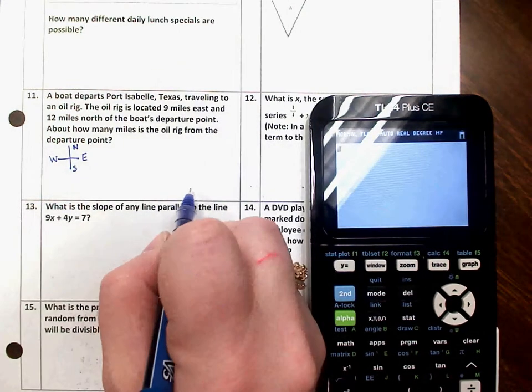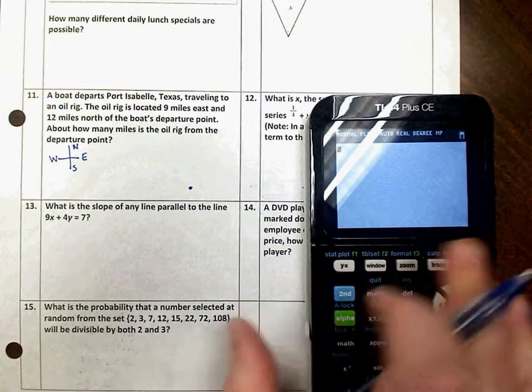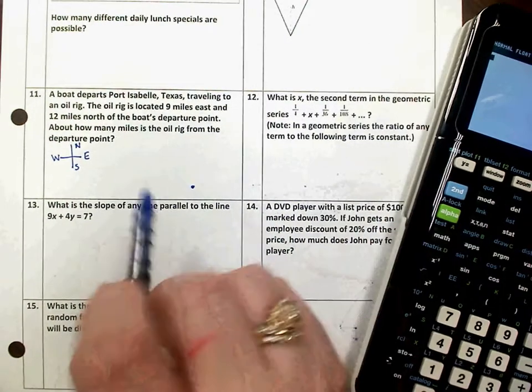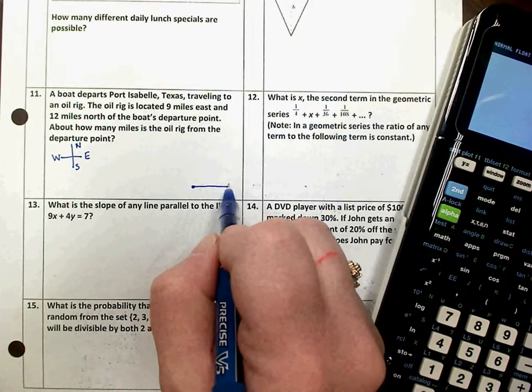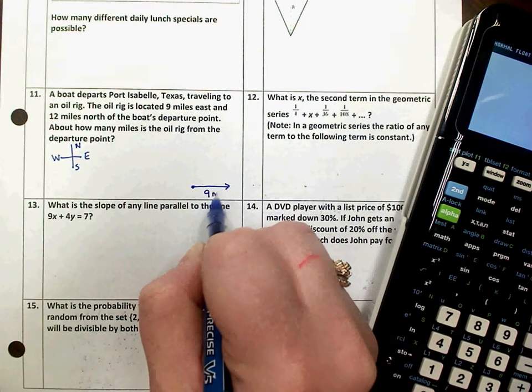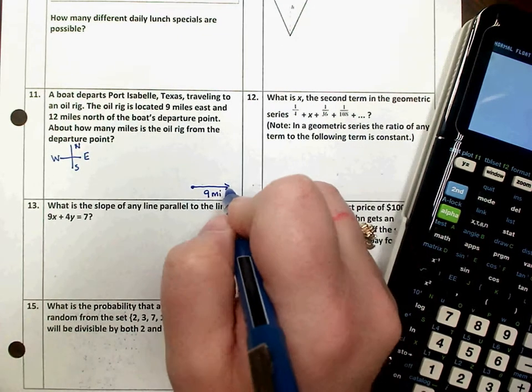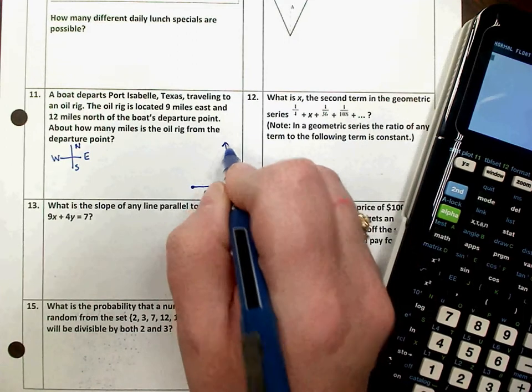So we're going to be starting at a place, and we're going to start by going 9 miles east. That means I'm going to go to the right 9 miles. Then I'm going to switch directions and start going north for 12 miles.